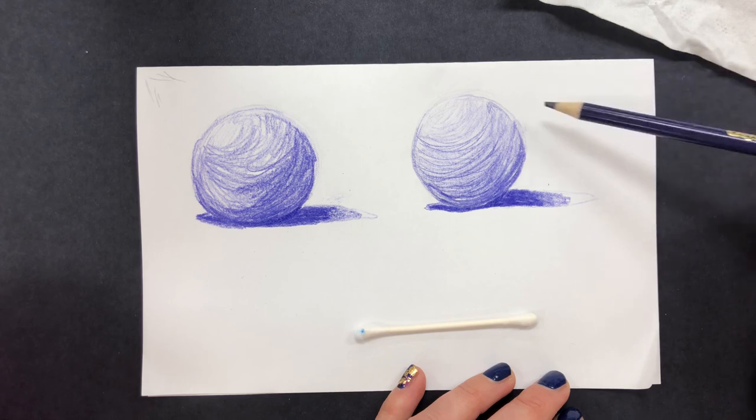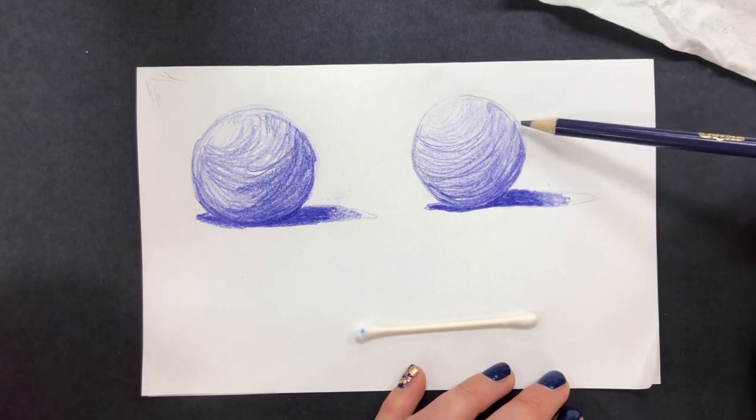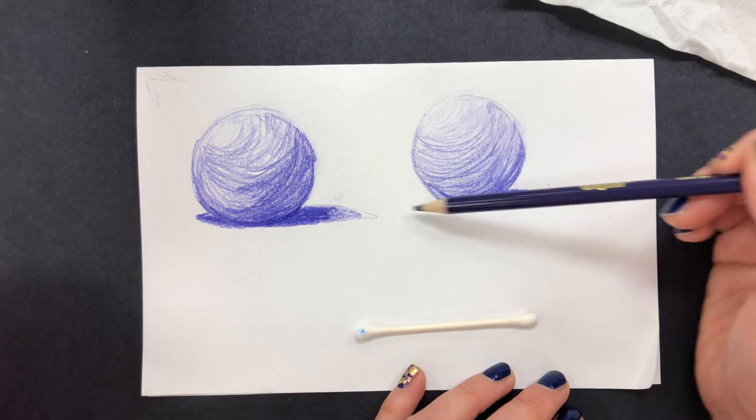And that would just be the opposite if the light source was coming from the other side. Then the highlight would be here and the cast shadow would be behind.